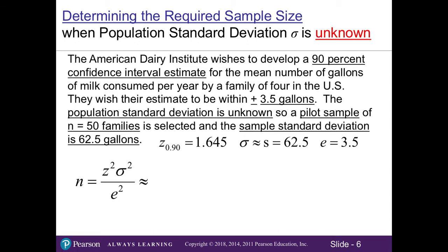Let's look at another example — what happens if we don't know the population standard deviation? The American Dairy Institute wishes to develop a 90% confidence interval estimate for the mean number of gallons of milk consumed per year by a family of four in the United States, within plus or minus 3.5 gallons. The population standard deviation is unknown, so a pilot sample of n=50 families is selected, and the sample standard deviation is found to be 62.5 gallons.